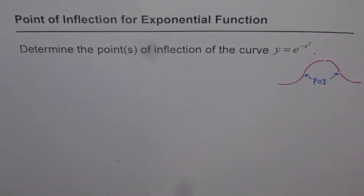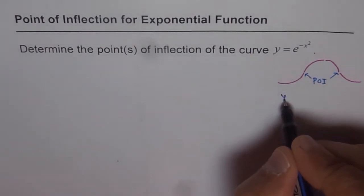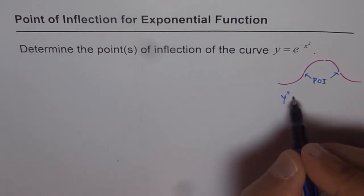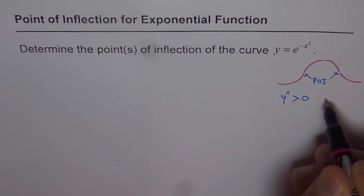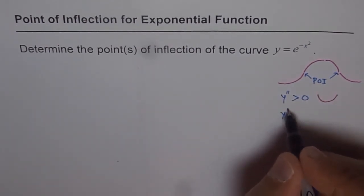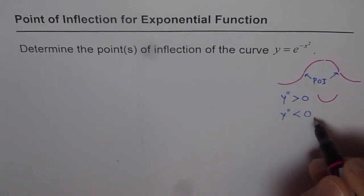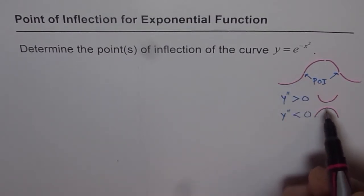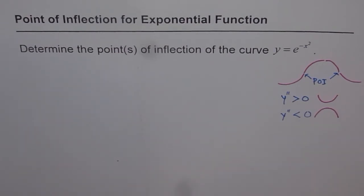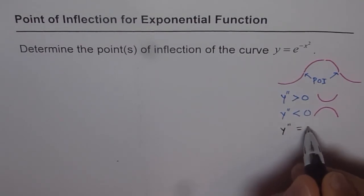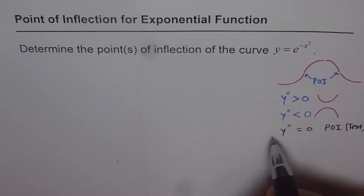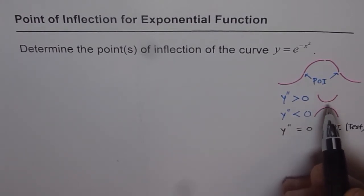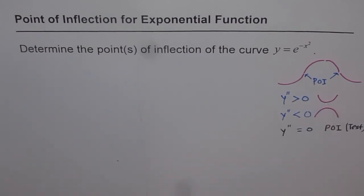We will try to find what these points are. The strategy is to find the second derivative. If the second derivative is greater than zero, the curve is concave up. If the second derivative is less than zero, the graph is concave down. At the point of inflection the concavity changes, so where the second derivative equals zero could be a point of inflection — but we need to test it. On either side, we check if the concavity changes. If it changes, a point of inflection exists; otherwise it does not.